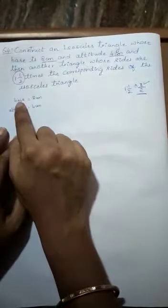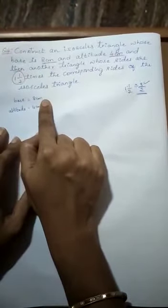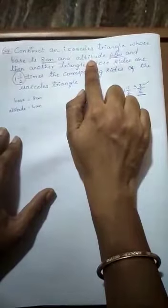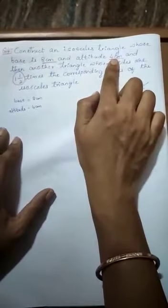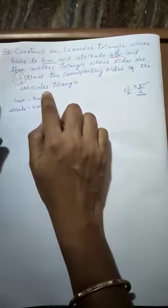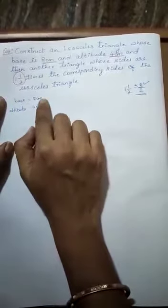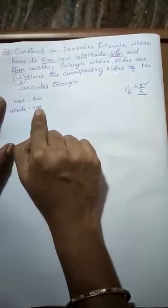Okay, observe the question. Let us write the data. They have only mentioned that base is 8 cm. So base is 8 cm. Altitude means height they have given. Altitude is 4 cm. Here we have to construct isosceles triangle. Isosceles triangle means as you all know two sides are equal. So base is 8 cm, altitude is 4 cm.